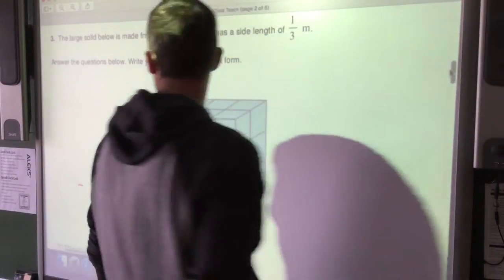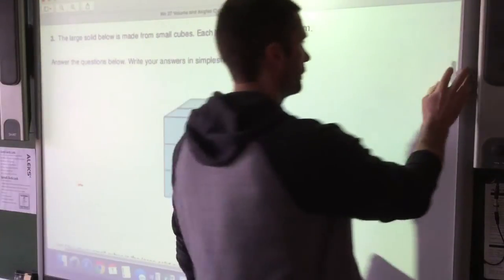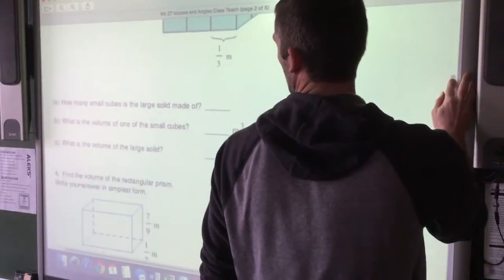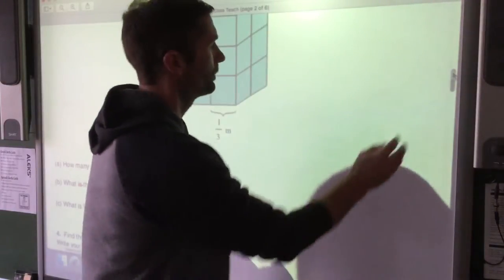Question three. The large solid below is made from small cubes. Each cube has a side length of one-third meter. Answer the questions below. Write your answer in simplest form.